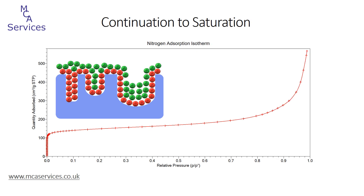As we continue towards saturation pressure — we can get quite close to it but not actually attain saturation vapour pressure — adsorption will continue to fill the mesopores and smaller macropores. This is shown by the increase in adsorption volume of the isotherm starting at around about 0.8 relative pressure. Close to saturation, the mesopore in our diagram has become completely filled with adsorbate, while the larger macropore remains only partially filled.